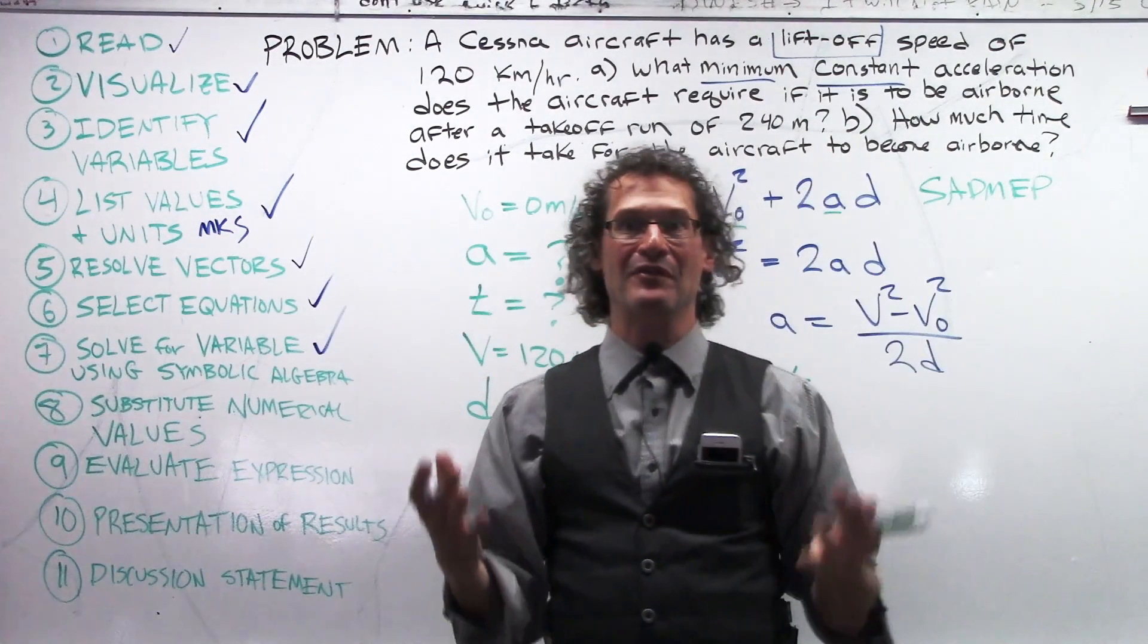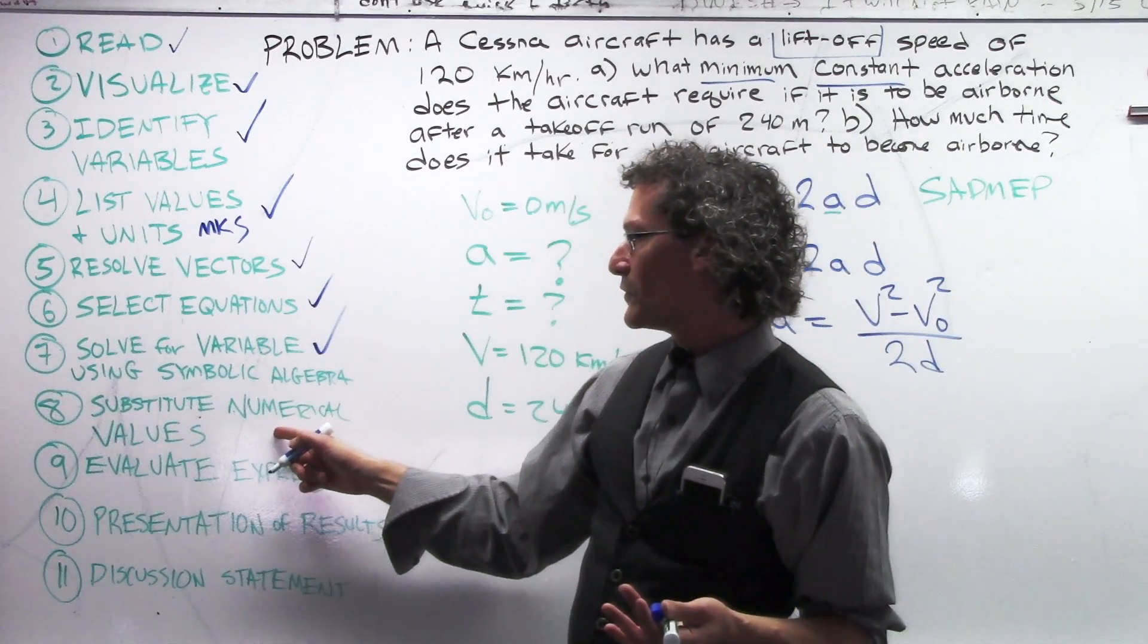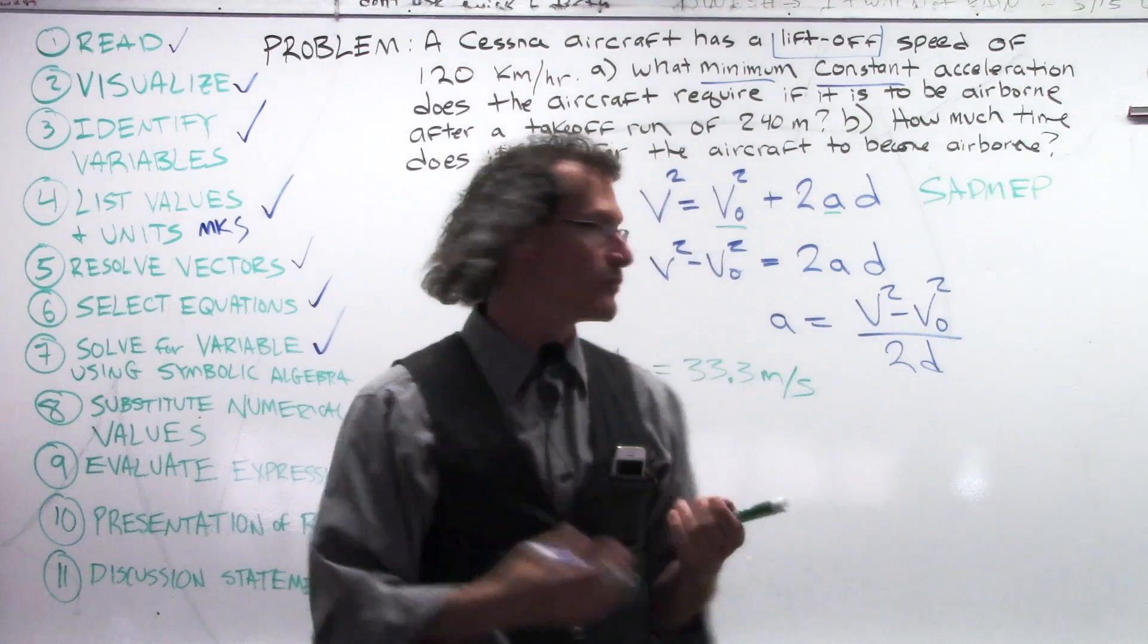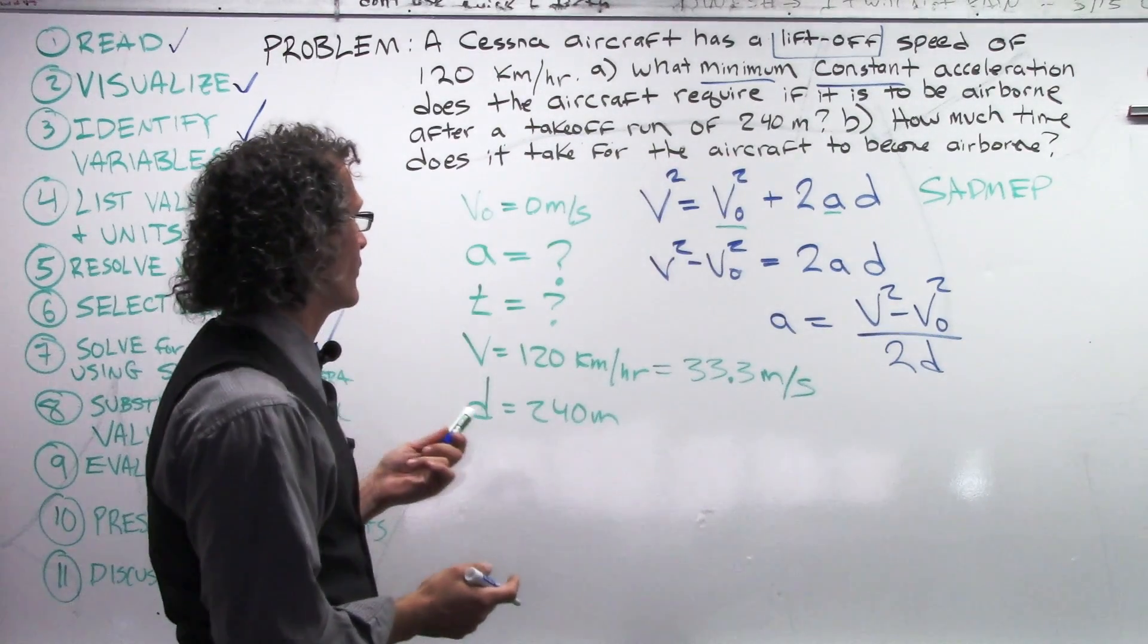Now, we have not only selected our equations from before, we have also solved for the variable using symbolic algebra for part A over here. Now, now, now, now. I know you wanted to do it earlier. No, no, no. Now, we substitute numerical values. Brilliant. Here they are.